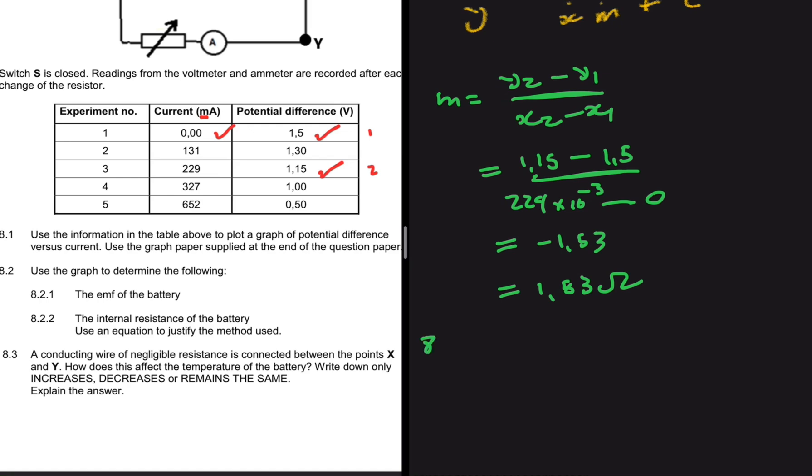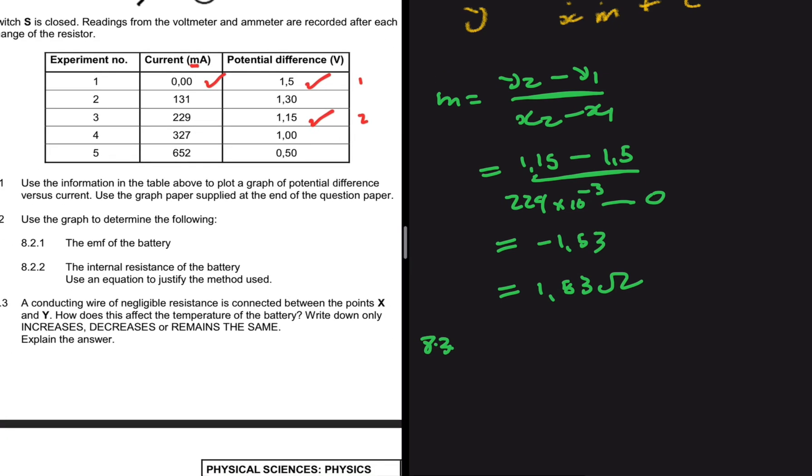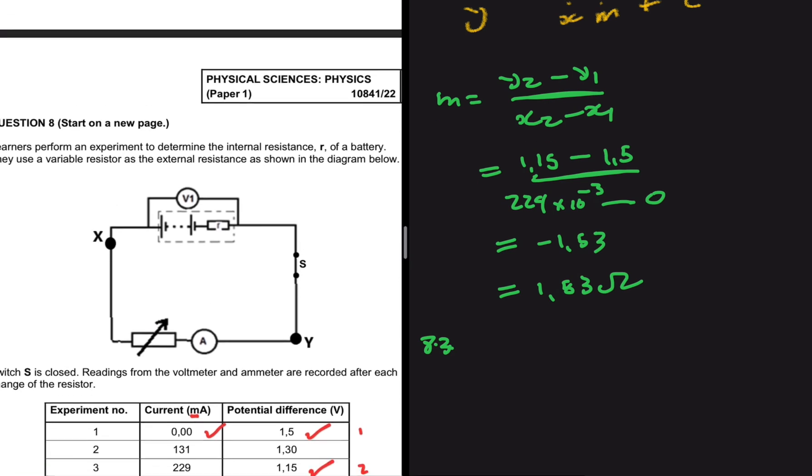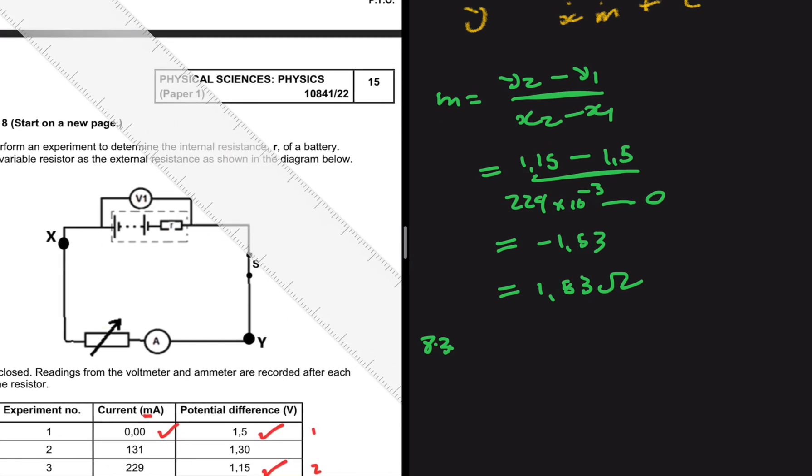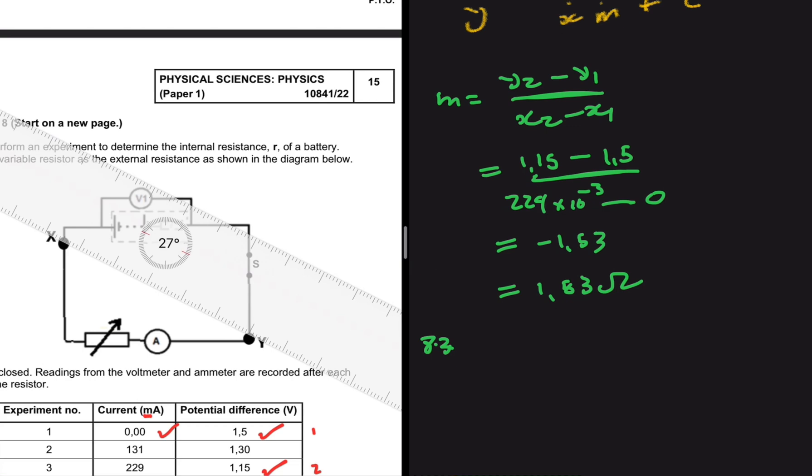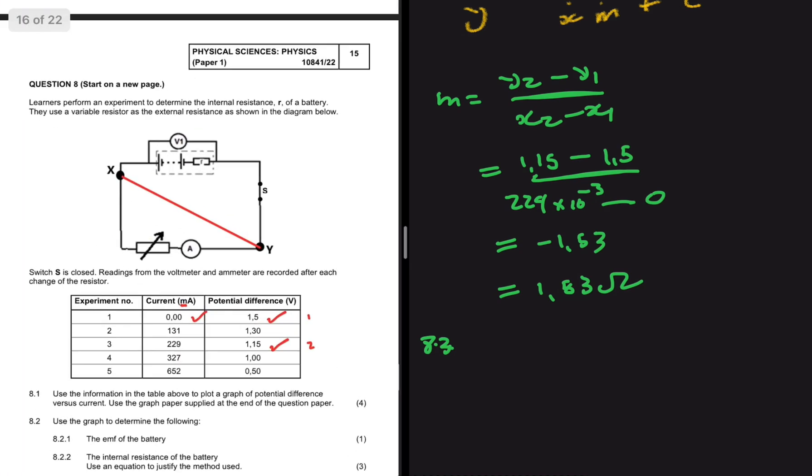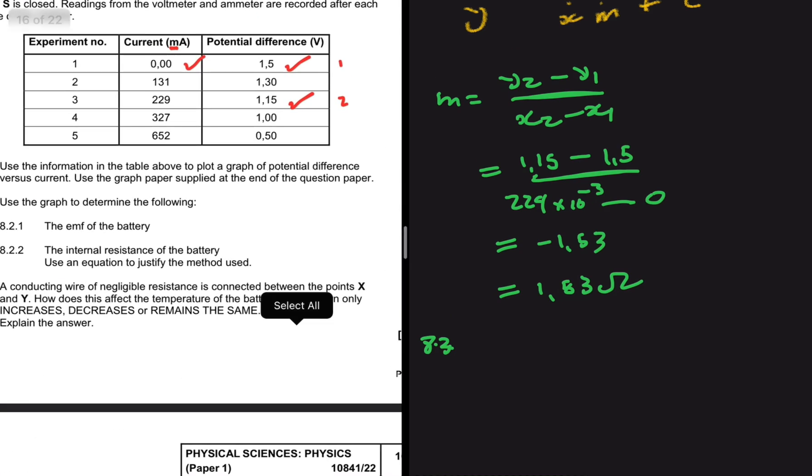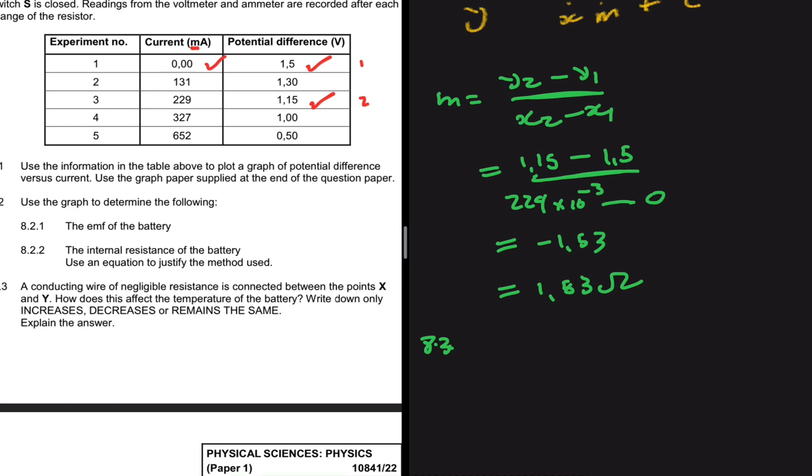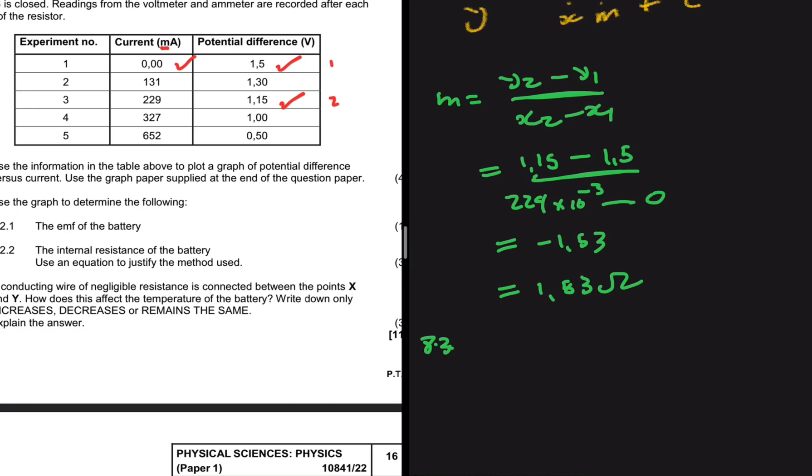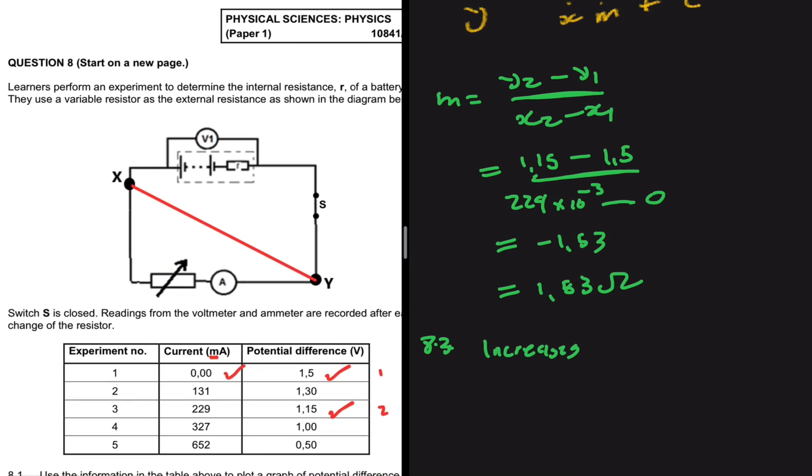Let's look at 8.3. A conducting wire of negligible resistance is connected between the points X and Y. Before we even continue reading, let's just go ahead and connect those two points so we can see with clarity what is gonna happen to our circuit. How does this affect the temperature of the battery? Write down only increase, decrease, or remain the same. Explain your answer. It is going to increase.